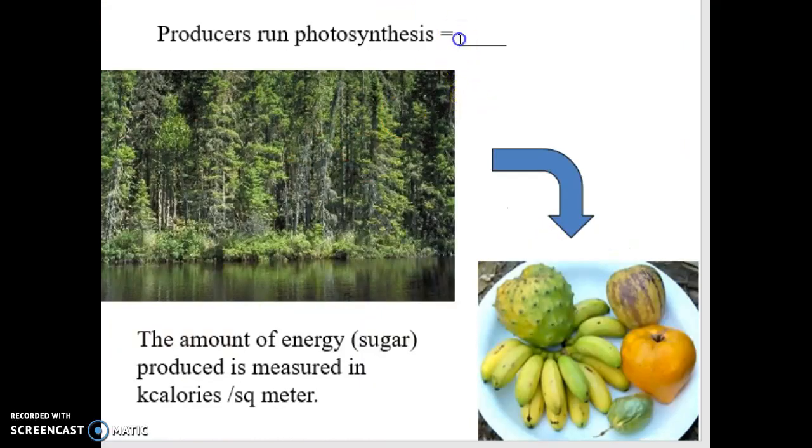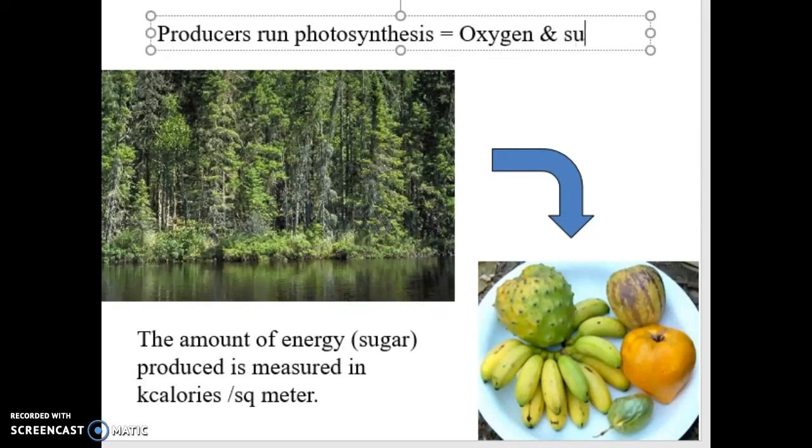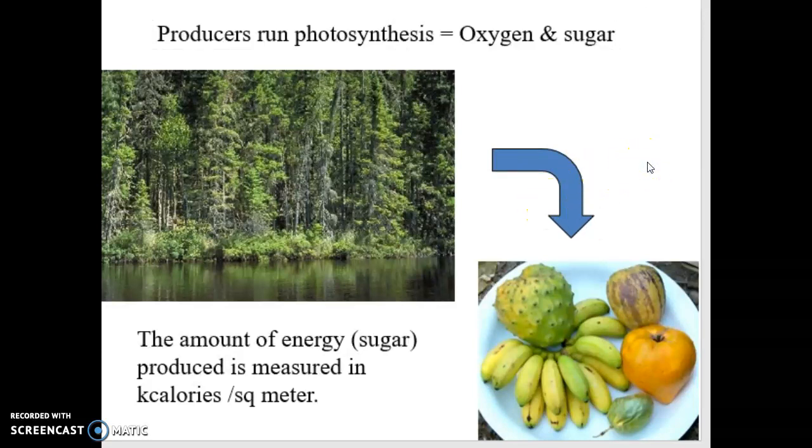Now, the producers, these guys run photosynthesis. So through the process of photosynthesis, they will produce oxygen and sugar. Sugar, carbohydrates, calories, energy, fruits, vegetables, etc. Now, the amount of energy that they produce can be measured. It's tangible to measure the amount of energy. A lot of times it's represented as kilocalories of energy per square meter of producer base. So if I have 100 acres in the forest, how many calories or kilocalories will the forest be able to produce? There is a tangible number to this.